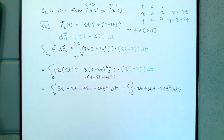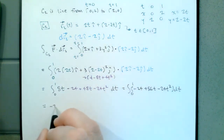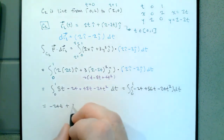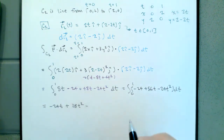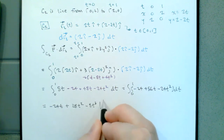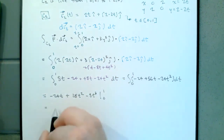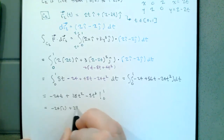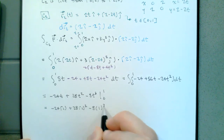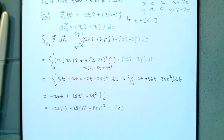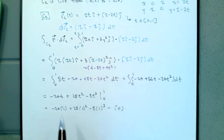Now I need to evaluate from 0 to 1. Finding the antiderivative: −24t + 28t² − 8t³, evaluated from 0 to 1. At t = 1: −24 + 28 − 8 = −4. At t = 0 we get 0. So the result is negative 4 again.